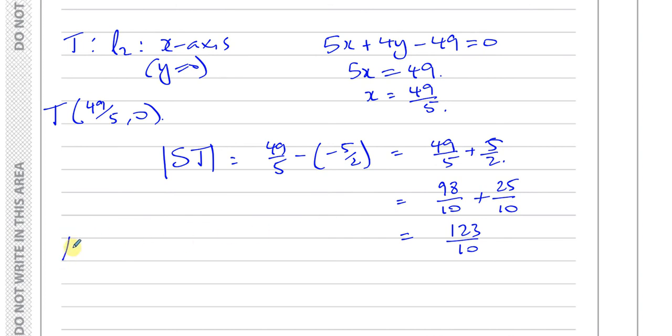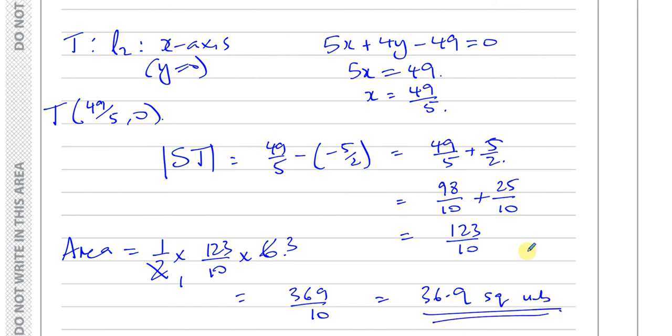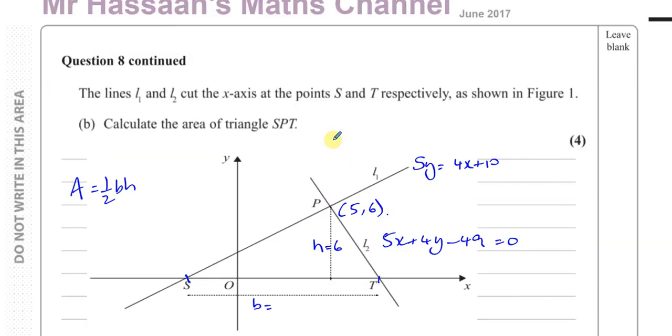So now we can say the area of the triangle is equal to a half times the base, which is 123 over 10, times the height, which was 6. So this cancels with that, leaving it with 3 up there. So you end up with 3 times 123, which is 369 over 10. We could say 36.9 square units. And there's the answer to question number 8, part B.